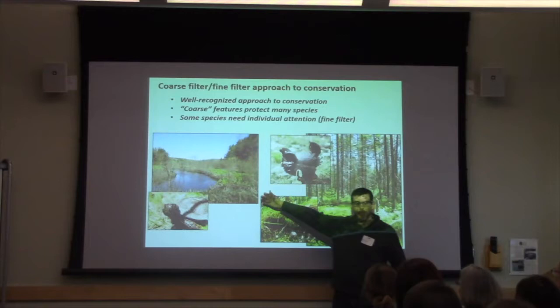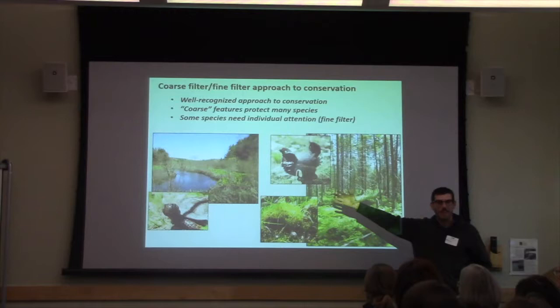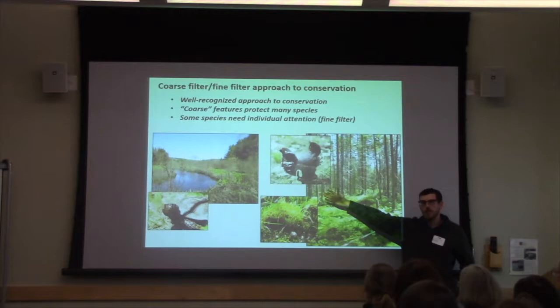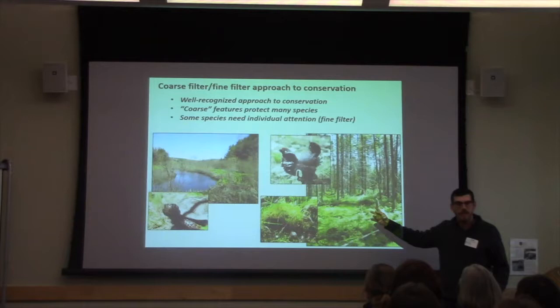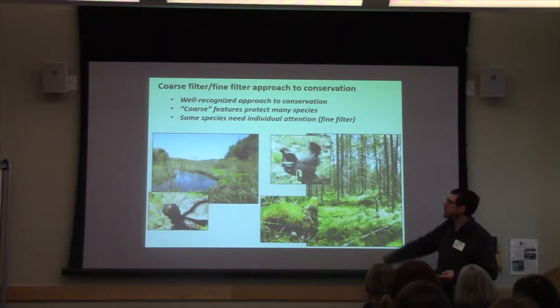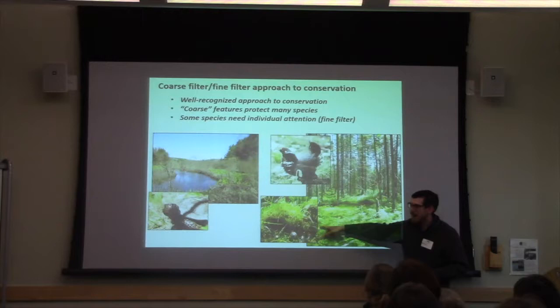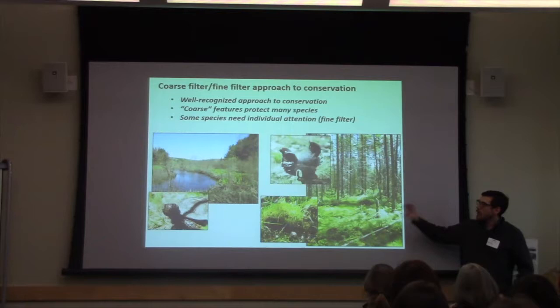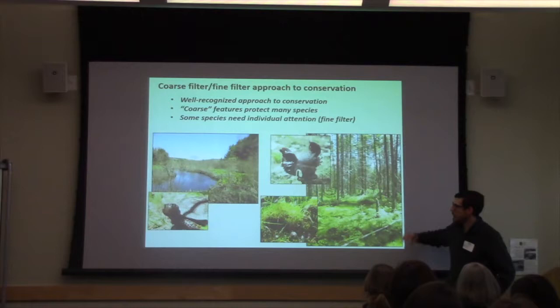For example, if you have an alluvial shrub swamp, you'll conserve alder and shrub willows, veratrum, skunk cabbage, and also habitat for species like wood turtles. Same thing for a black spruce swamp — you don't have to worry about conserving black spruce or the many species of sphagnum moss because they're represented in that swamp. You might also capture species like spruce grouse or mosses that grow only in specific niches. Coarse filters are features of the landscape that work to conserve many species, including ones perhaps no one knows anything about.